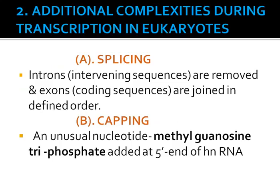The next topic for discussion is additional complexities during transcription in eukaryotes. During transcription — that is, the formation of RNA from DNA in eukaryotes — the initial or primary transcribed RNAs are non-functional. They contain both exons, which are coding or expressed sequences, and introns, which are non-coding or intervening sequences. This is called heterogeneous nuclear RNA, or HnRNA. During splicing, introns are removed and exons are joined in a defined order.